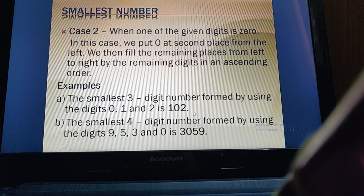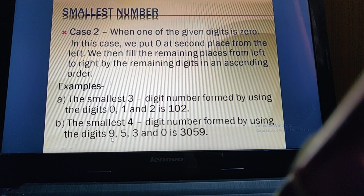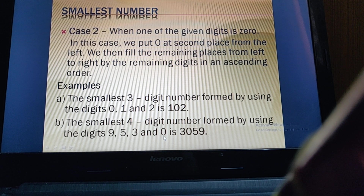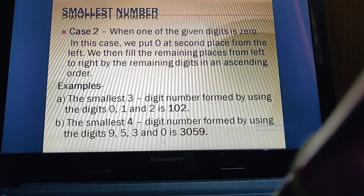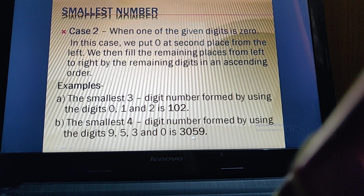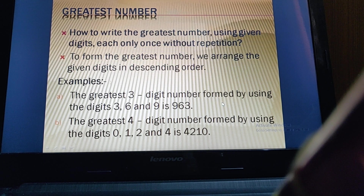If we want to make the smallest four-digit number using digits 9, 5, 3, and 0: we cannot start from zero, so we start from 3. At the second place, zero will occupy, then comes 5, then 9. We have arranged these digits in ascending order except zero, so the smallest four-digit number is 3059.